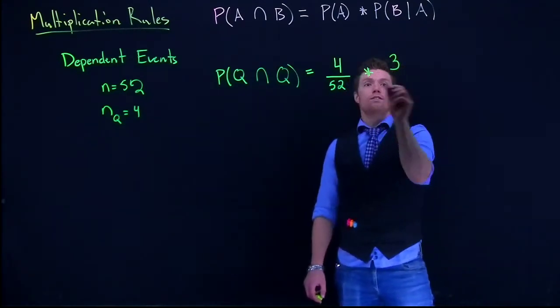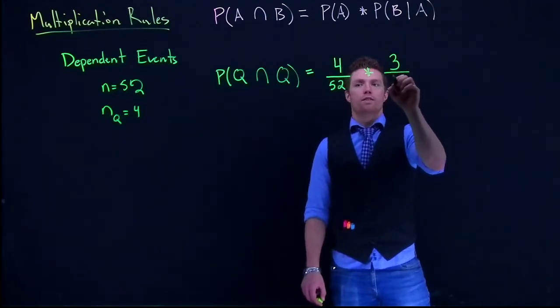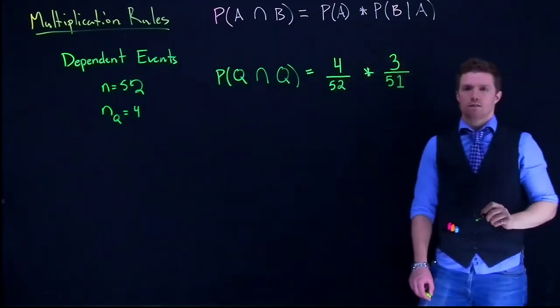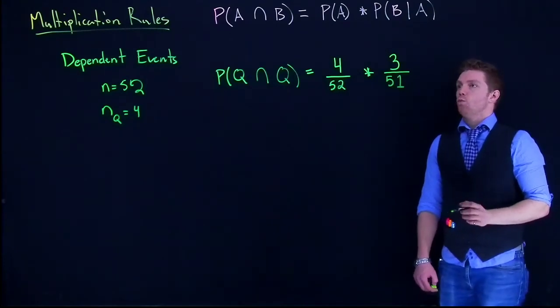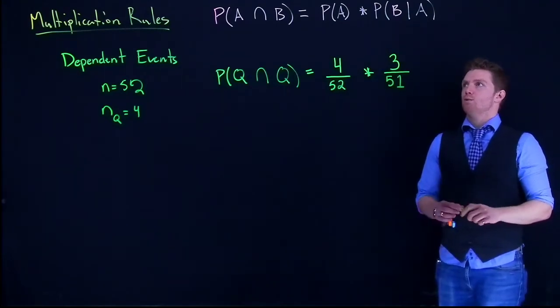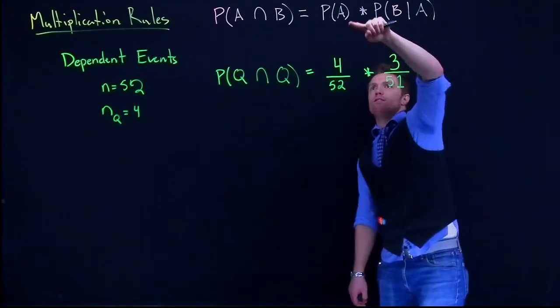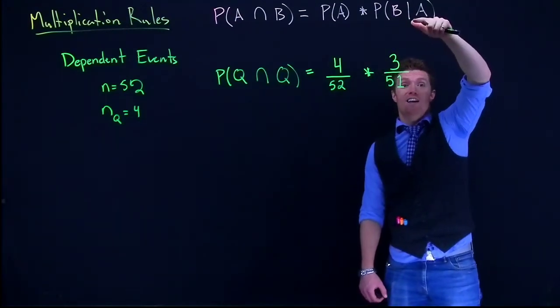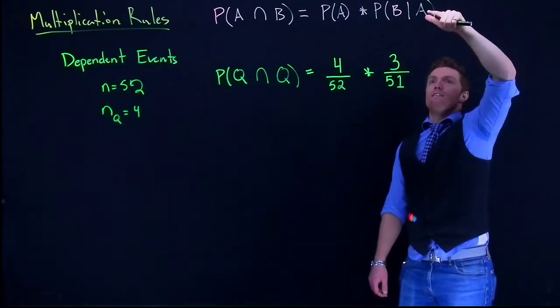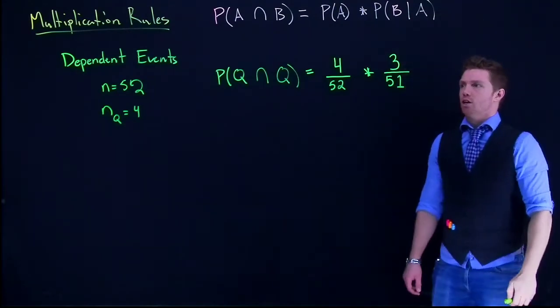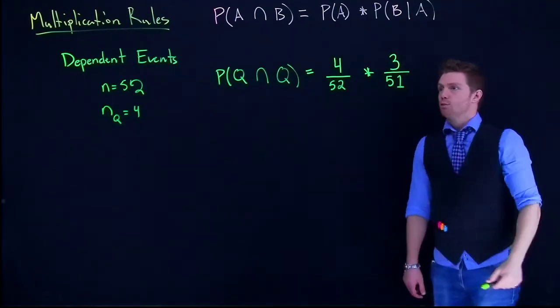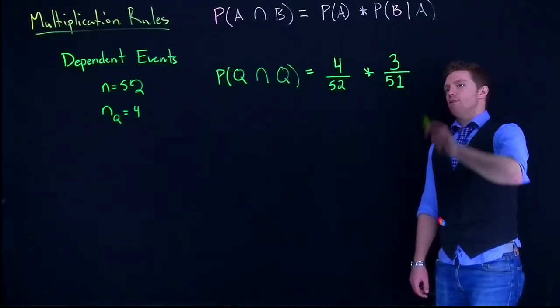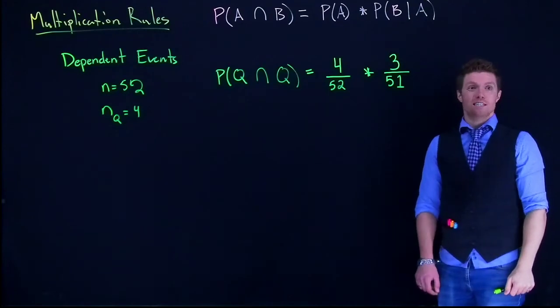Also, there's not 52 cards in the deck anymore. There are 51 cards in the deck. So when we have dependent events, we have to look at the probability of the first event happening. And then the second one is, what's the probability of this second event happening given that the first one has occurred? And so we get this probability, 4 divided by 52 for the first one multiplied by 3 divided by 51. And that's for dependent events.